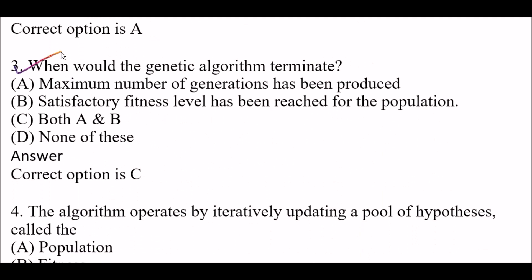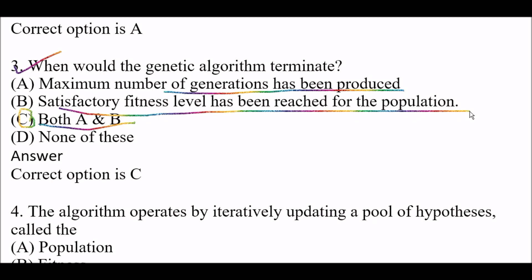When would the genetic algorithm terminate? Option A: Maximum number of generations has been produced. Option B: Satisfactory fitness level has been reached for the population. Option C: Both A and B. Option D: None of these. Right answer is Option C — Both A and B. Genetic algorithm terminates when the maximum number of generations has been produced, and when satisfactory fitness level has been reached for the population.